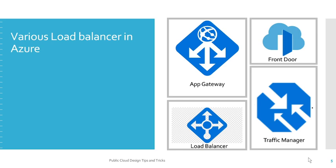Let's try to understand the different load balancers available in Microsoft Azure. There are two types of load balancing services: global load balancing service and regional load balancing service. For global load balancing, even in case of multiple geographical regions going down, your traffic will be redirected to other geographical regions. For that we have Azure Front Door and Traffic Manager. For regional load balancing, when you want to distribute traffic within a region, you use Application Gateway and Azure Load Balancer.